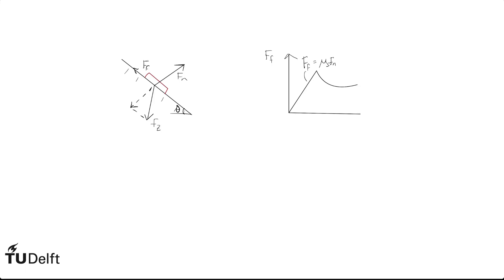How big are these components? For the angle theta that the table makes with the horizontal, since the gravitational force is vertical, that same angle theta also appears in the force decomposition. From basic trigonometry, the magnitude of the component perpendicular to the table is the gravitational force times the cosine of theta, and the component along the table goes with the sine of theta. A simple check: if we imagine tilting the table back to horizontal, the component along the table disappears and sine of theta is zero, while the perpendicular component equals the full gravitational force — and indeed the cosine of zero is 1.